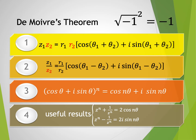Here we have four formulas to remember. To find the product of two complex numbers, we just multiply the moduli and add the arguments. Second formula: to find the quotient of two complex numbers, we just divide the moduli and subtract their arguments.